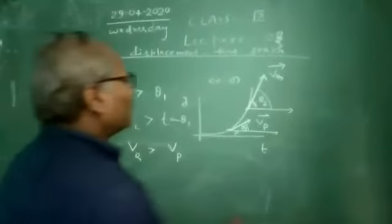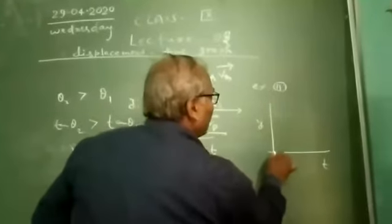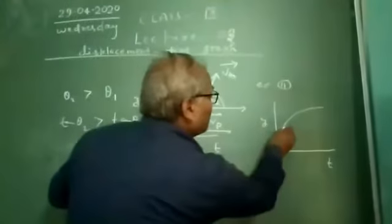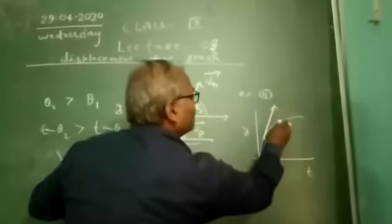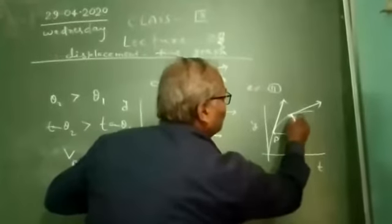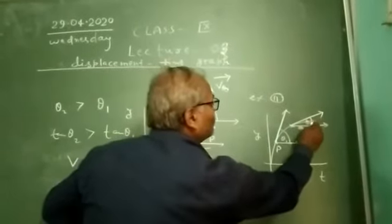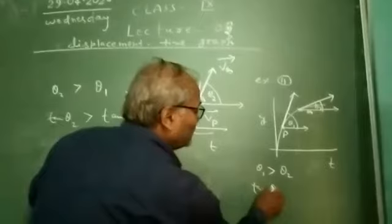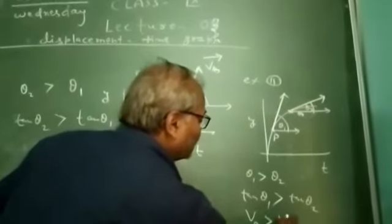Similarly, in this second example we draw the time axis and position axis, and we take two points P and Q on the graph. We draw the tangent again and draw two horizontal axes parallel to the time axis. Here, theta 1 is greater than theta 2. So tan theta 1 is greater than tan theta 2, and so the velocity at point P is greater than the velocity at point Q.